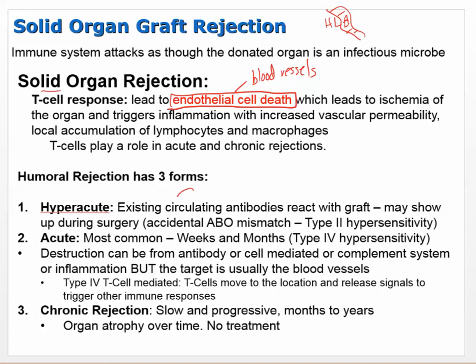Humeral rejection has three forms. Hyperacute is related to blood type mismatch - a type 2 hypersensitivity. If the blood types don't match, there's a very fast rejection - it may show up during surgery, and an accidental ABO mismatch is going to be a type 2, turning the blood to gel almost immediately.